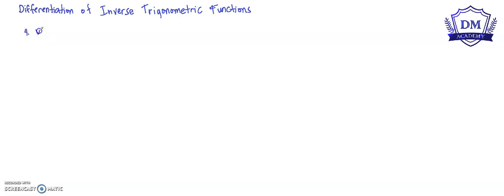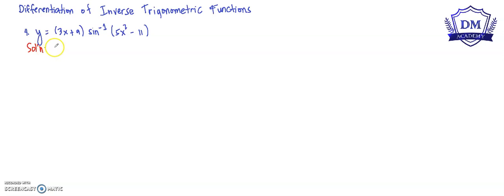Let's say we have our function y is equal to (3x + 9) multiplied by the inverse sine of (5x² - 11).